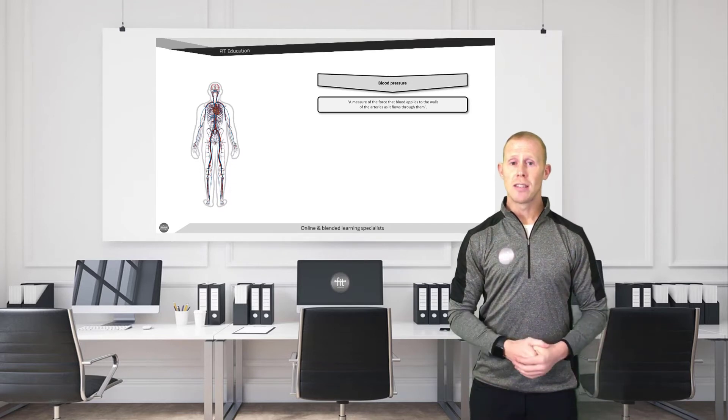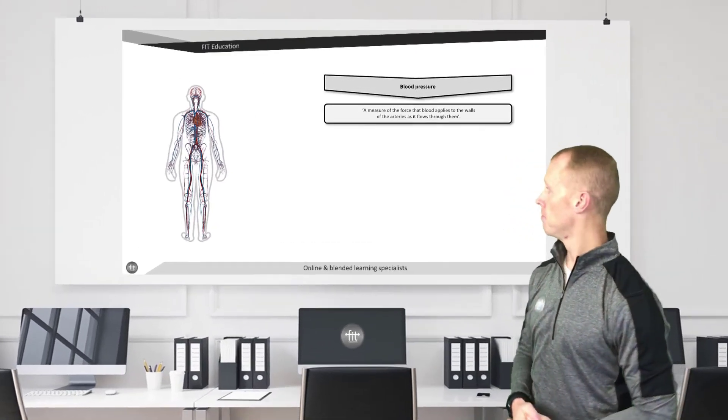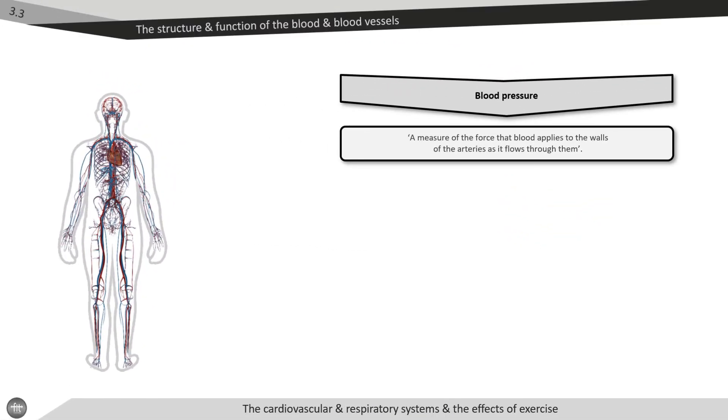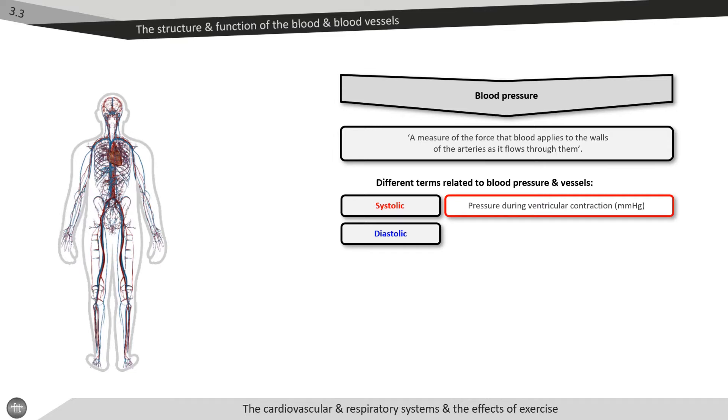Let's have a look at the different blood pressure classifications. Blood pressure is a measure of the force that the blood applies to the walls of the artery as it flows through them. It's measured in millimeters of mercury and is expressed using two numerical readings. The two numbers represent the systolic and diastolic blood pressures. Systolic blood pressure is the pressure exerted on the artery walls when the cardiac muscle is contracting.